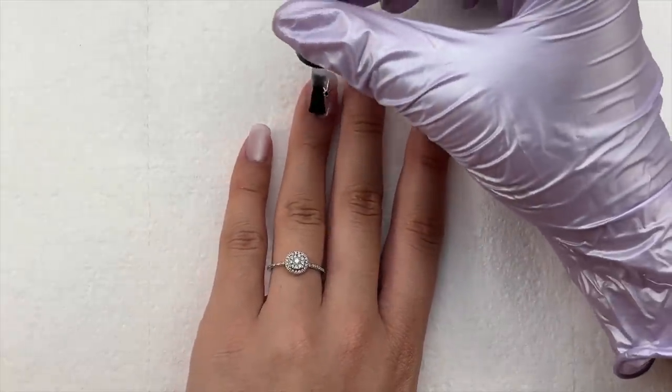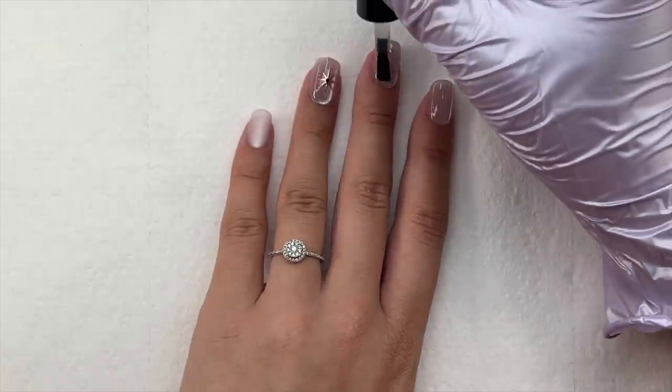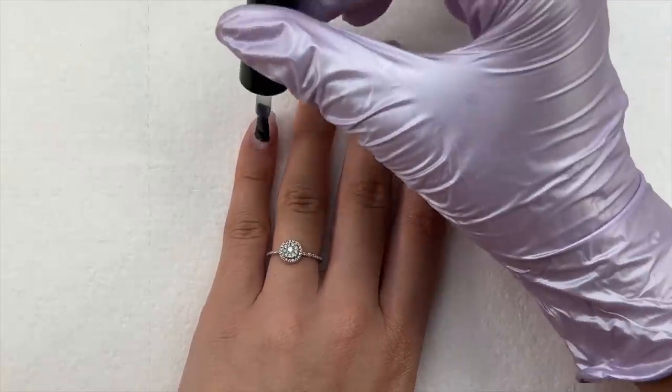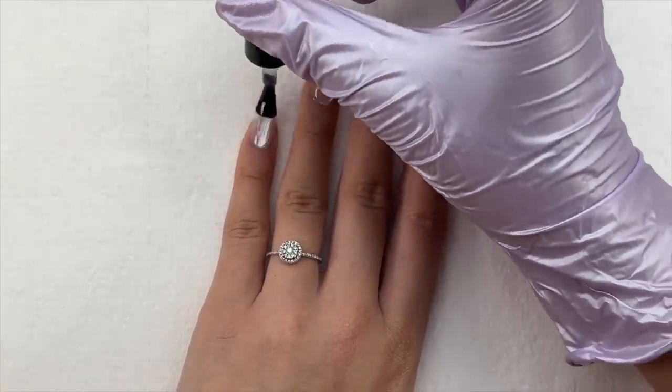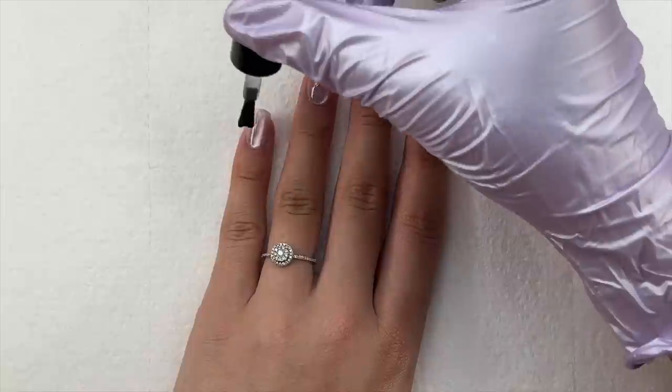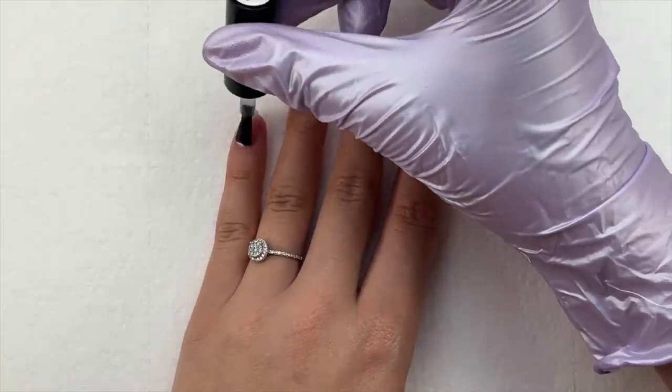So I went in with this, I applied that to all of the nails, cured for 30 seconds in the nail lamp, and then I will be applying my glossy top coat and curing that for 30 seconds as well, and then we are finished.